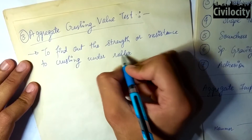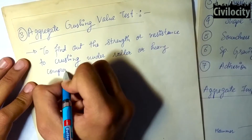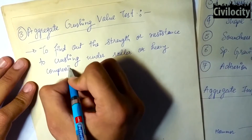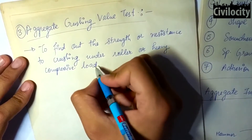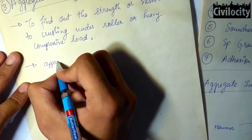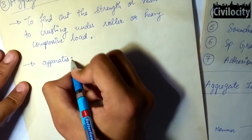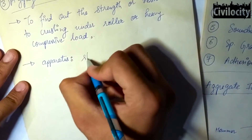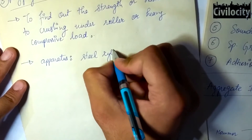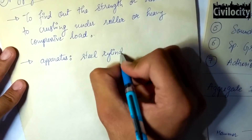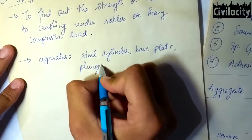Aggregates possessing high resistance to crushing, or low crushing value, are preferred for use in high quality pavements. Please don't get confused — higher crushing value does not mean higher strength. That is totally wrong. Higher crushing value means lower strength of aggregates, and vice versa.